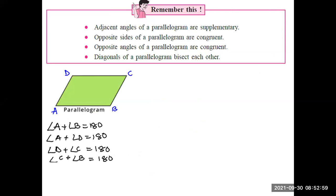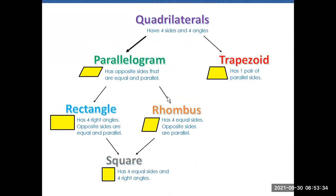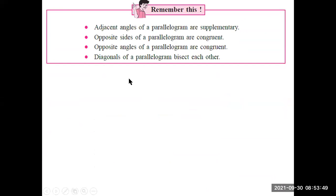Then we see the properties of a parallelogram. The sum of adjacent angles is supplementary — that is, the sum of adjacent angles is 180 degrees. The opposite sides are congruent, the opposite angles are congruent, and the diagonals bisect each other. These four basic properties of a parallelogram are also applicable for rhombus, rectangle, and square, because as per the flowchart, whatever properties belong to a parallelogram will be true for rectangle, rhombus, and square as well.